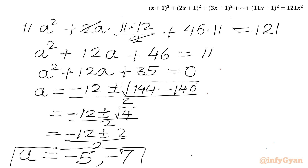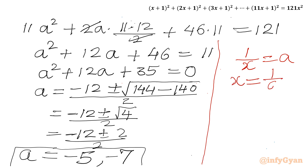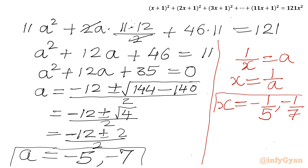Since our substitution was 1/x = A, we get x = 1/A. So x = −1/5 or x = −1/7. These are the final answers. Do not forget to like, share, and subscribe. Bye-bye till the next video, good luck, take care!